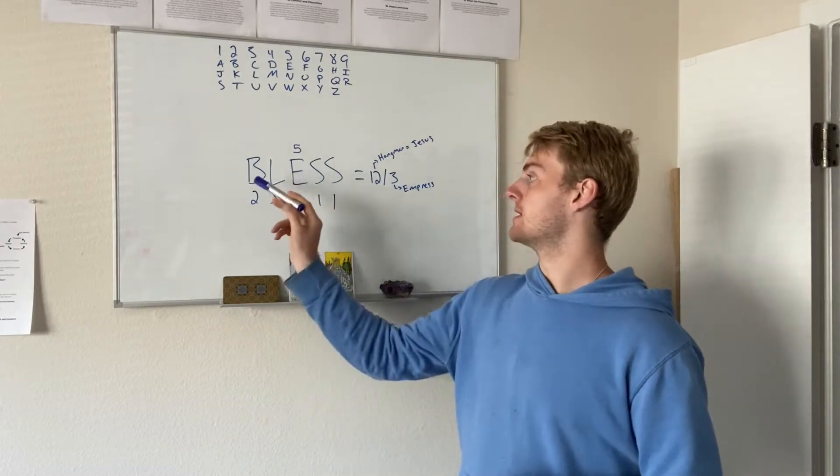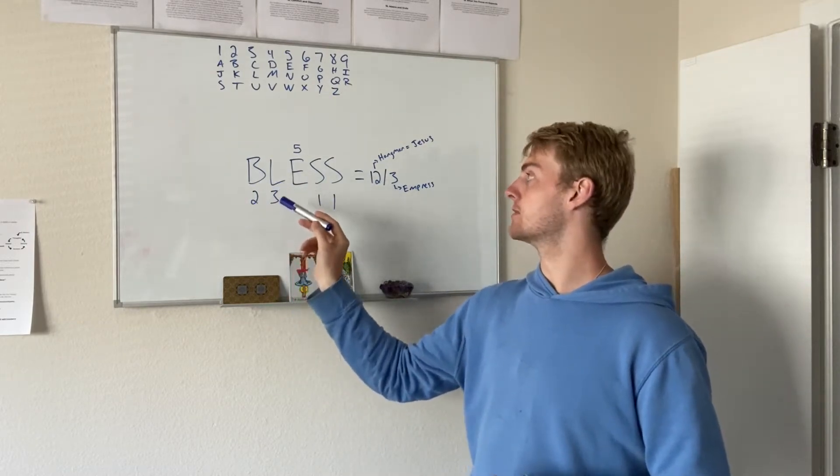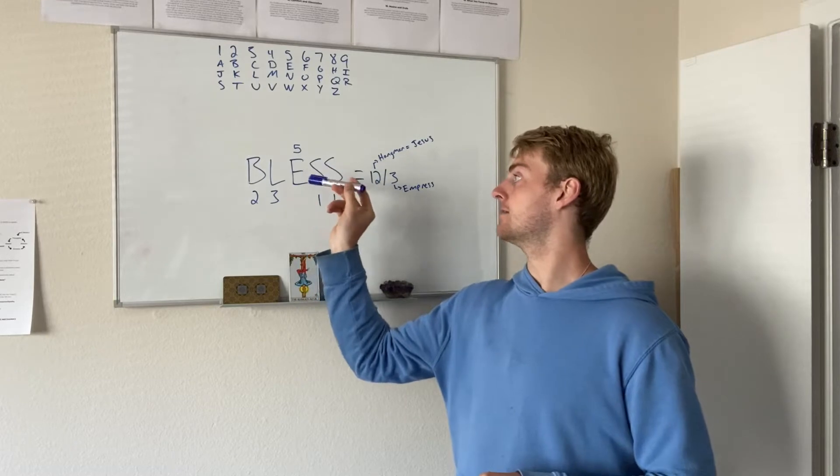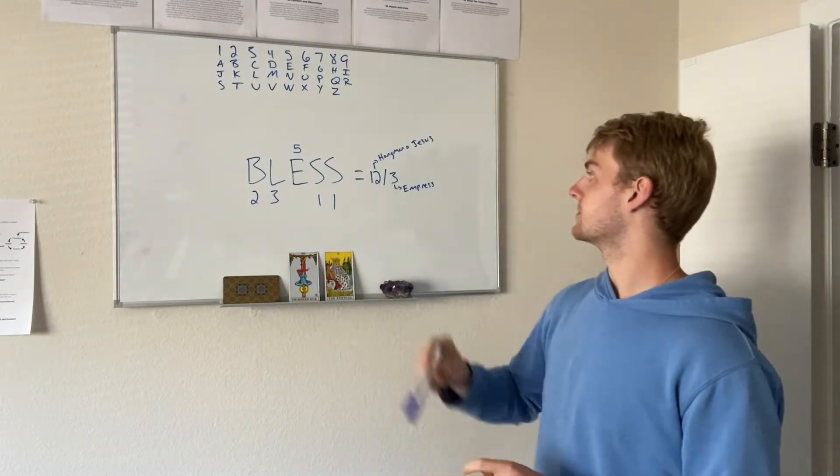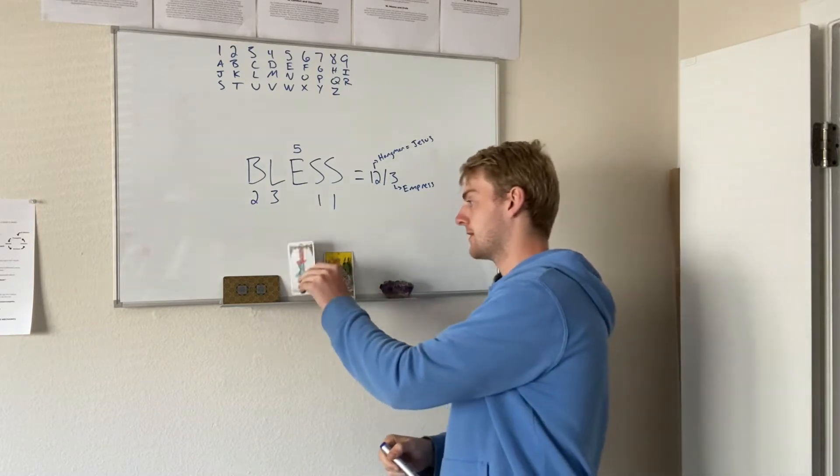How we got that: B=2, L=3, E=5, S=1, S=1. If you break that up you get 12, The Hanged Man.